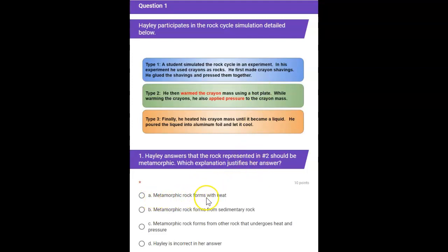A. Metamorphic rocks form with heat. B. Metamorphic rocks form from sedimentary rock. C. Metamorphic rocks form from other rocks that undergo heat and pressure. Or D. Haley is incorrect with her answer.